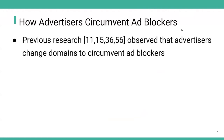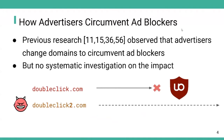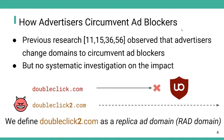Previous research observed that advertisers change domains to circumvent adblockers. For instance, because doubleclick.com is already blocked, the advertiser registers and changes to another domain, doubleclick2.com, to serve the identical ad content. Because the domain is not in the filter list, it can successfully bypass the adblocker. However, no prior study has systematically studied the impact of domain-changing behaviors on adblocker filter lists. In our research, we define this kind of domain as a replica ad domain, or red domain. In the example, doubleclick2.com is defined as a red domain.